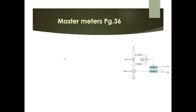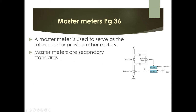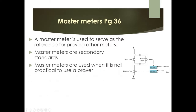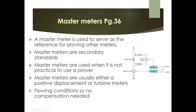Master meters serve as a reference for proving other meters. They are secondary standards used to calibrate daily meters, and are employed when it is not practical to use a pipe prover. Most master meters are either positive displacement or turbine meters. They are also used at flowing conditions by diverting flow, so no interruption occurs and no compensation for temperature or pressure conditions is needed.